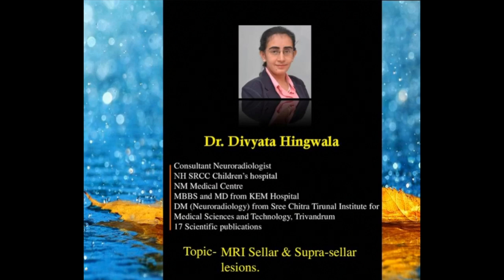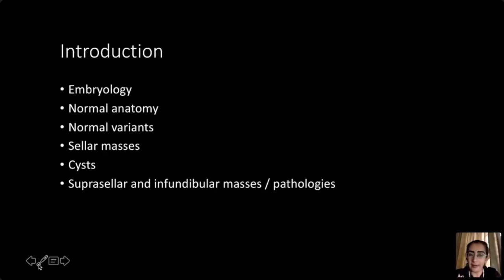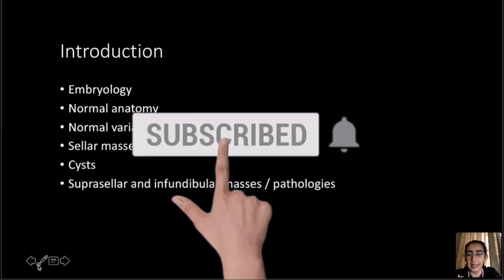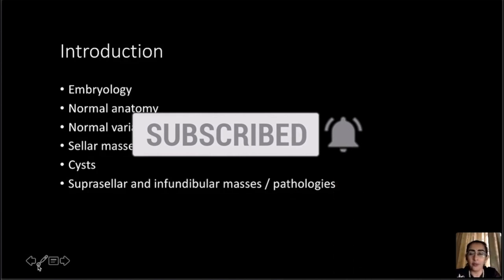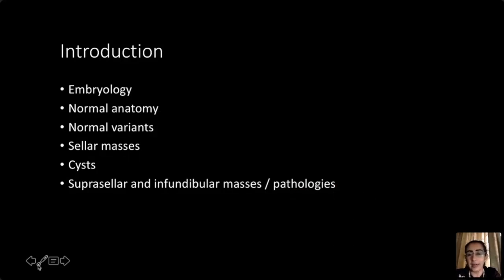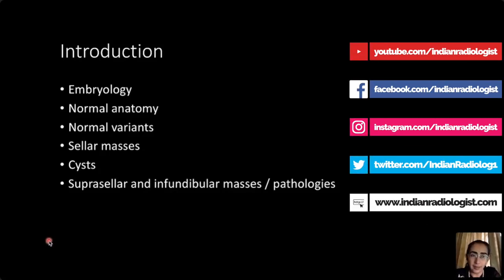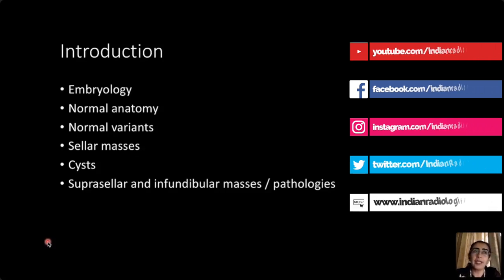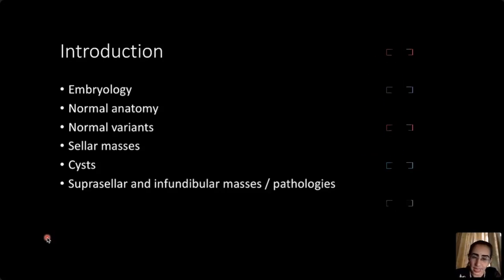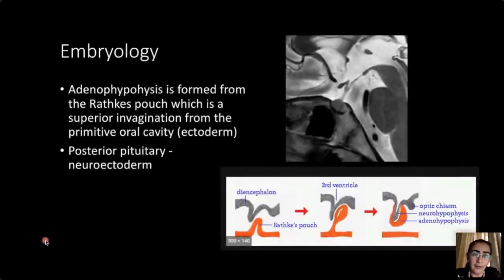This is a presentation on imaging in sellar and suprasellar lesions. I will begin with embryology, followed by normal anatomy, a few anatomical variants, and then we will discuss sellar and suprasellar masses including solid and cystic lesions. This is by no means a comprehensive overview but more of a case-based review of interesting cases to help with day-to-day reporting.